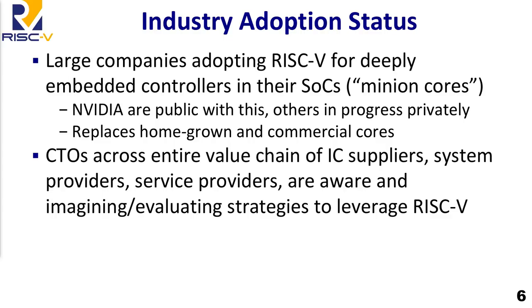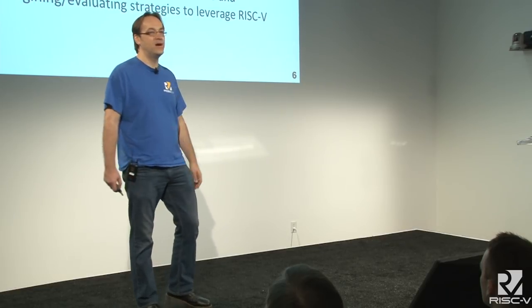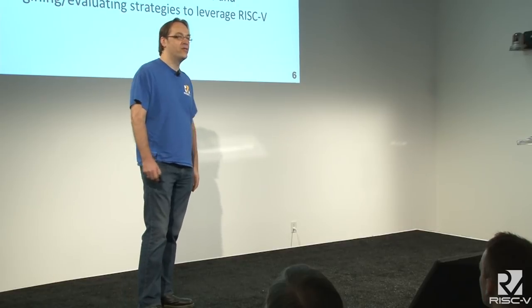Our goal now is to become the industry standard ISA for everything, and we're well along toward that goal. Looking at industry adoption: large companies are adopting RISC-V at least for what we call minion cores — deeply embedded controllers in their large SoCs. Nvidia is public about this; all future GPUs are going to use RISC-V from Nvidia. There are other companies doing the same thing not yet announced. CTOs everywhere are at least analyzing and thinking about their RISC-V strategy.